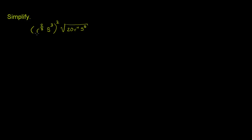We're asked to simplify r to the 2/3, s to the 3rd, that whole thing squared, times the square root of 20 r to the 4th, s to the 5th. Now this looks kind of daunting, but I think if we take it step by step it shouldn't be too bad.